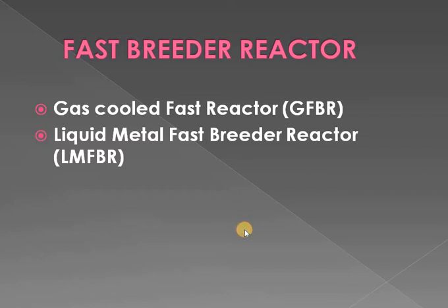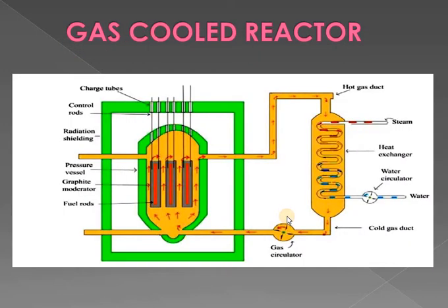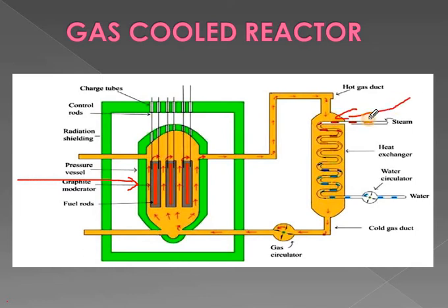Let us first discuss the gas-cooled fast breeder reactor. This schematic sketch clearly shows the working principle of the gas-cooled reactor. The main components present are the pressure vessel and the heat exchanger. Steam gets generated in the heat exchanger, while the pressure vessel is the main component for producing the nuclear reaction. This reactor is somewhat similar to previous reactors like the PWR and CANDU reactor.